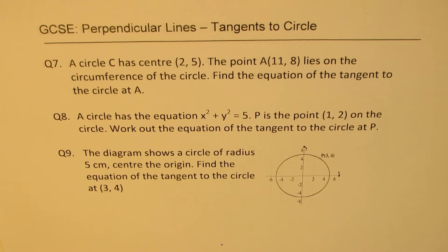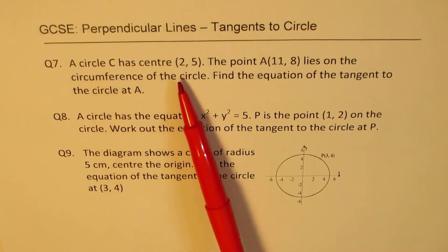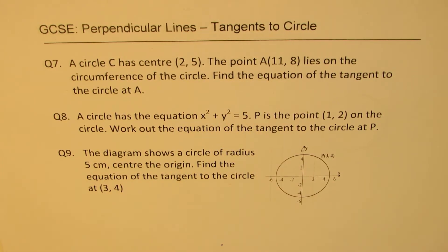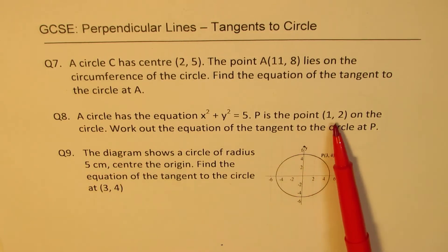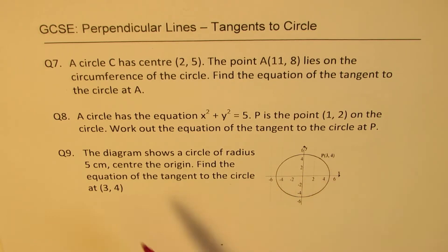We have three questions to cover, all of which are a critical part of learning and an important application of perpendicular lines. Question 7: a circle C has center (2, 5); the point A(11, 8) lies on the circumference — find the equation of the tangent at A. Question 8: a circle has equation x² + y² = 5; P is the point (1, 2) on the circle — find the equation of the tangent at P. Question 9: a circle of radius 5 centered at the origin — find the equation of the tangent at (3, 4).